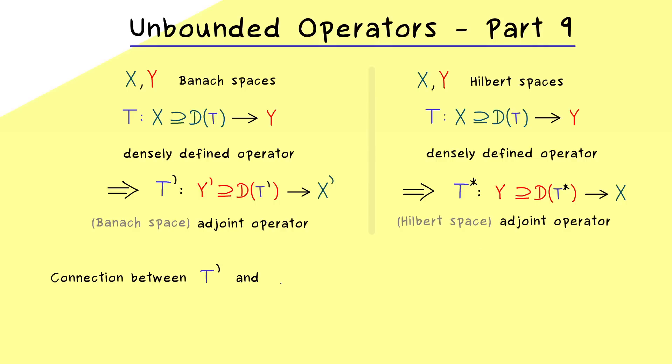The connection is immediately given by the so-called Riesz representation theorem. This one tells us how the dual spaces look for Hilbert spaces. They are quite similar, because we find an isomorphism between X and X' if we have a Hilbert space. Indeed, this one we have proven in the functional analysis course. More precisely, what we have here is an antilinear isometric isomorphism.